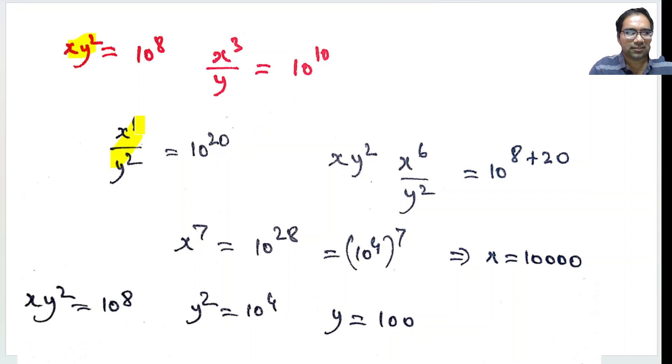Now, let us multiply this and this. We can cancel y², right, xy² into x⁶/y² equals 10²⁰ plus 8 which is 10⁸ plus 20, right, 10²⁸.